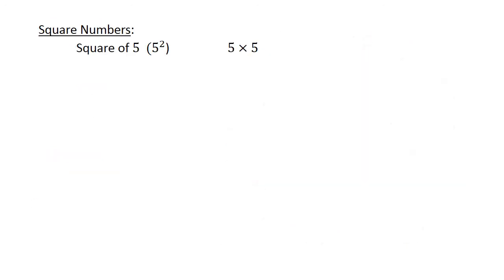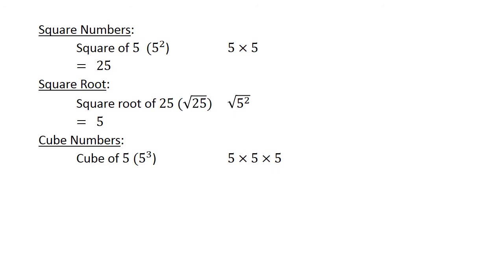Square numbers. The square of 5 equals 25. Square root of 25 equals 5. The cube of 5 equals 125. The cube root of 125 equals 5.